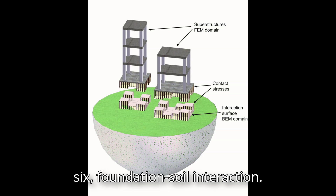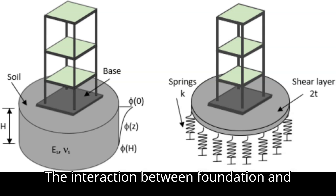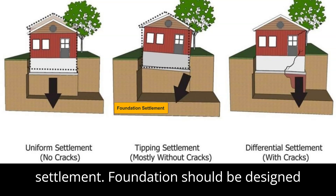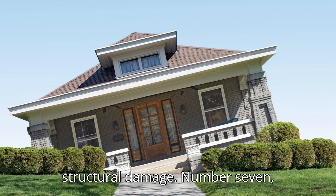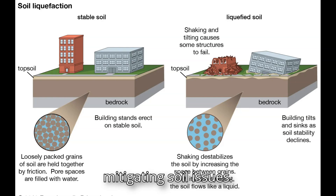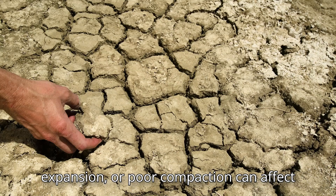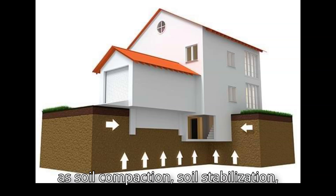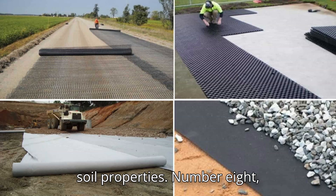Number six: foundation-soil interaction. The interaction between foundation and the soil involves stress distribution and settlement. Foundations should be designed to minimize differential settlement, that is, uneven sinking, which can cause structural damage. Number seven: mitigating soil issues. Soil issues like liquefaction, soil expansion, or poor compaction, can affect foundation performance. Techniques such as soil compaction, soil stabilization, and the use of geotextiles can improve soil properties.